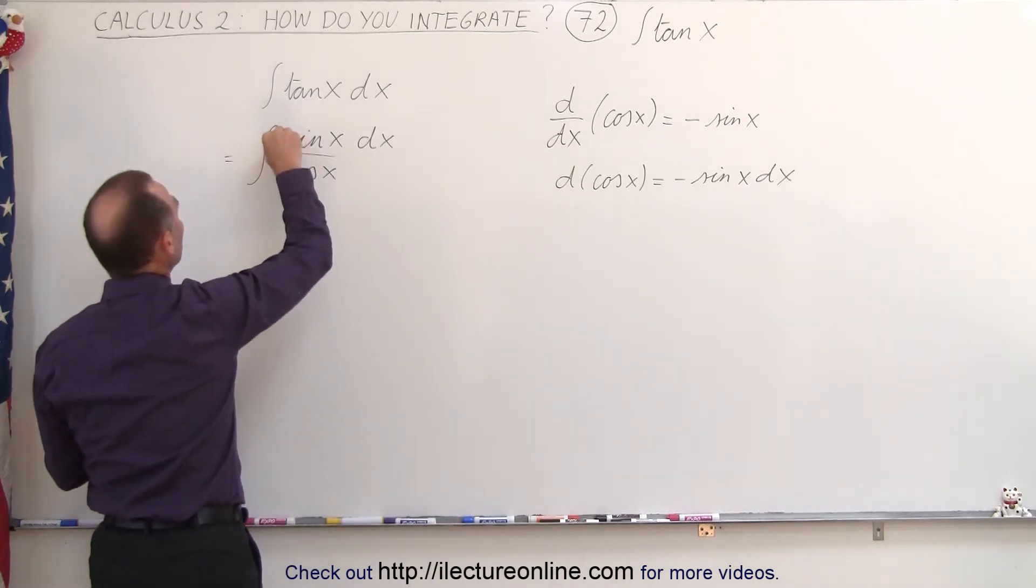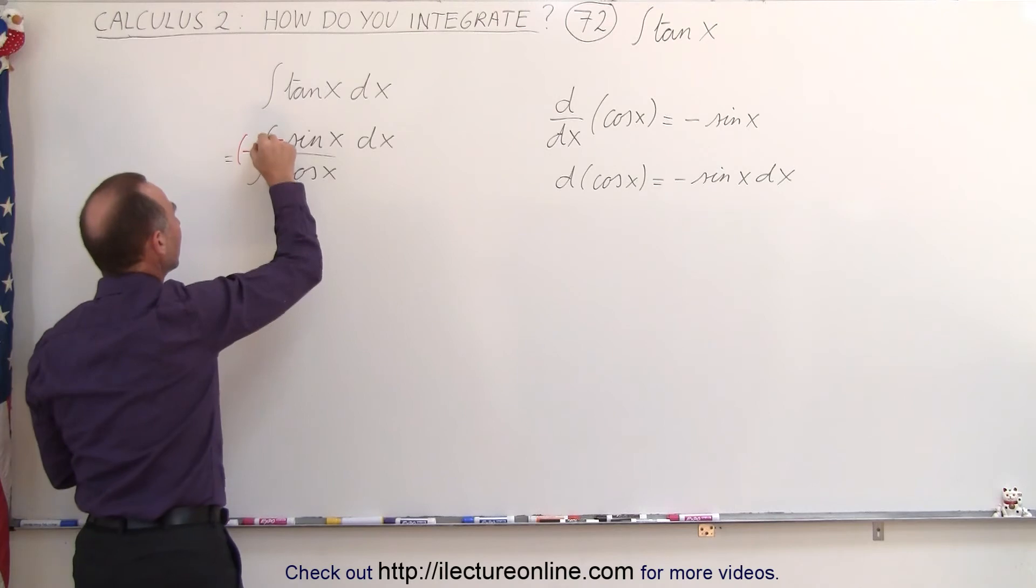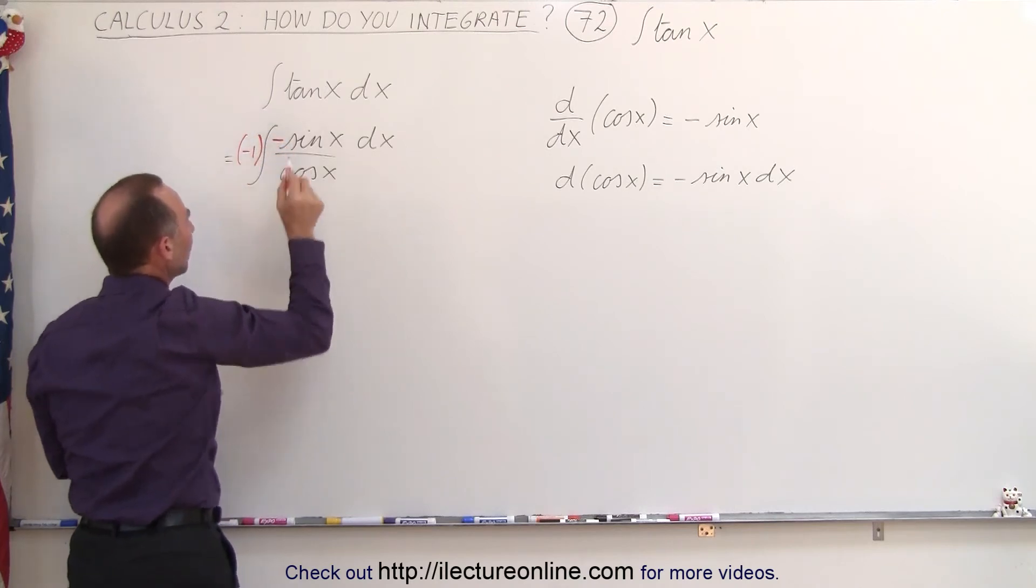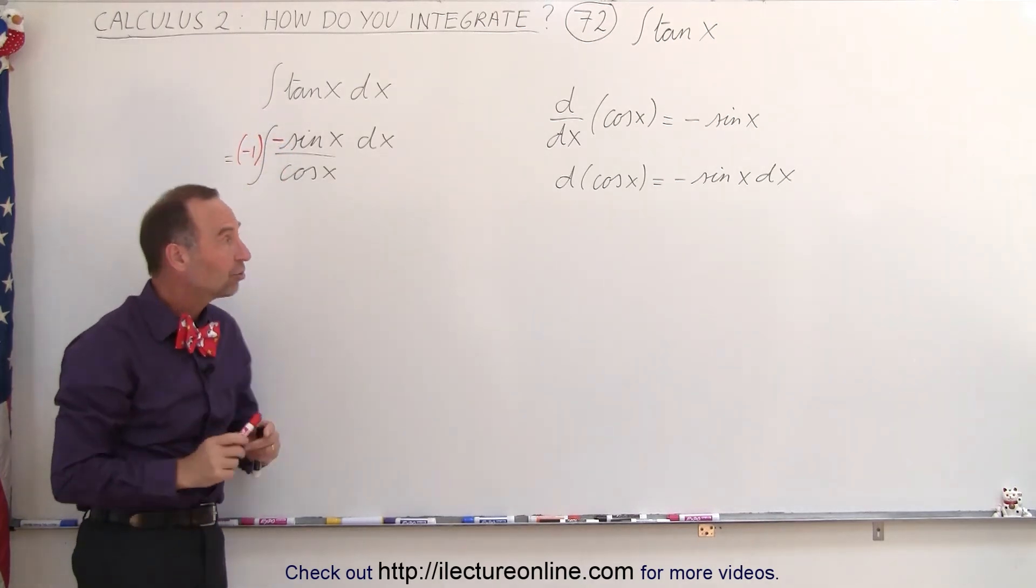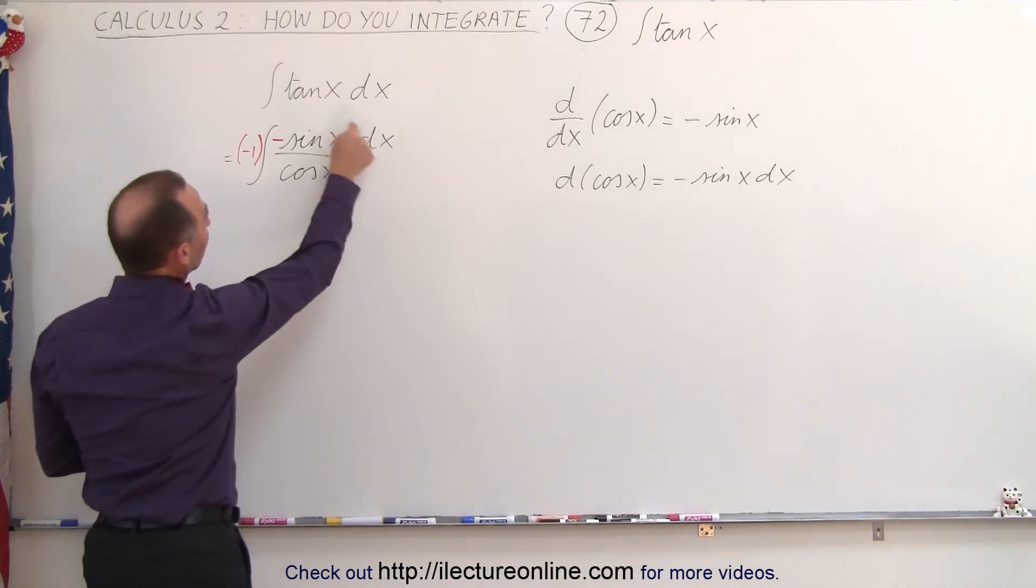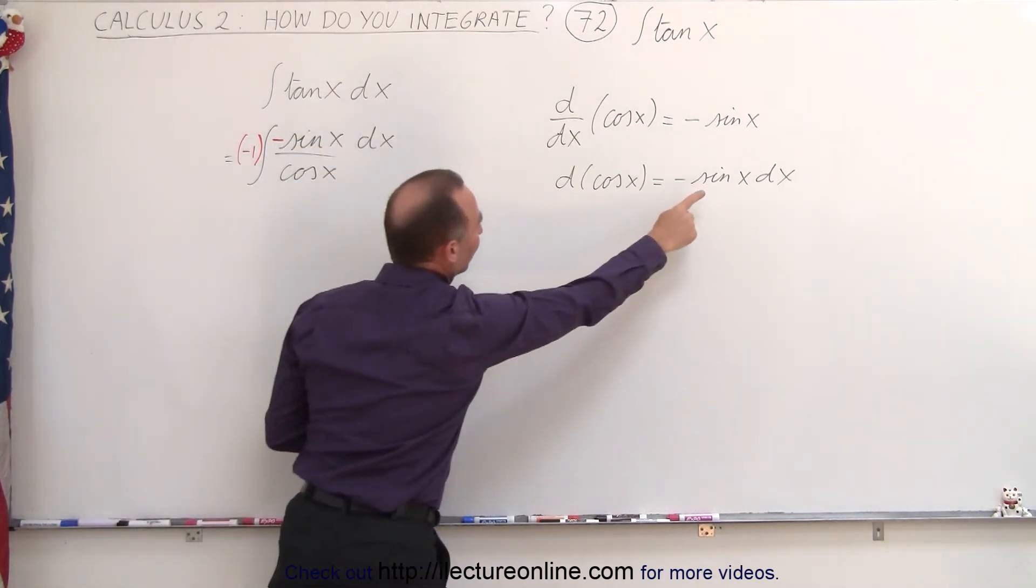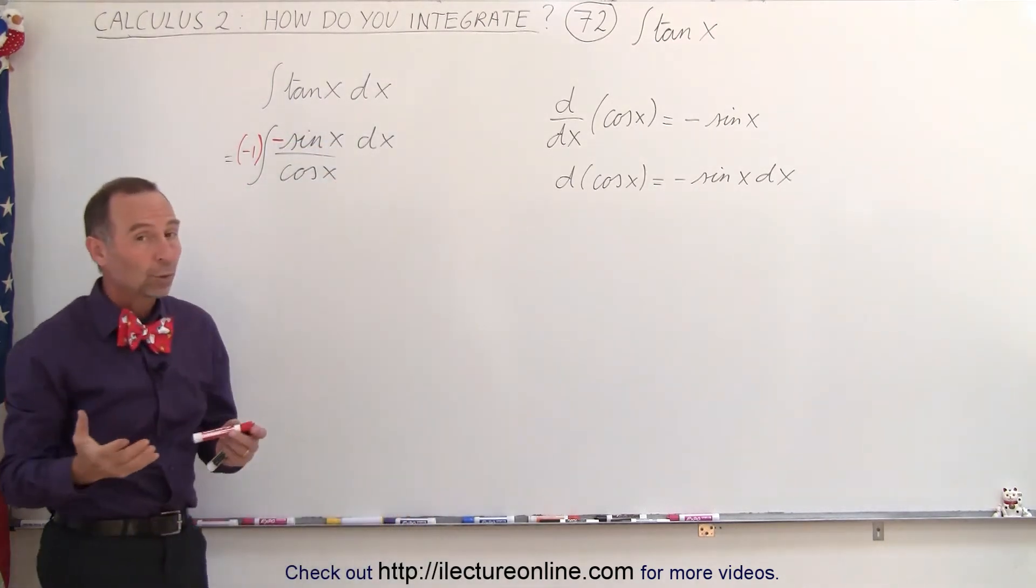So we're going to multiply the numerator by a negative, and of course, then we have to multiply it times the negative again to cancel out that negative. So we end up with the exact same thing we started with. But now when we look at the numerator, that is the exact differential of the denominator. In other words,